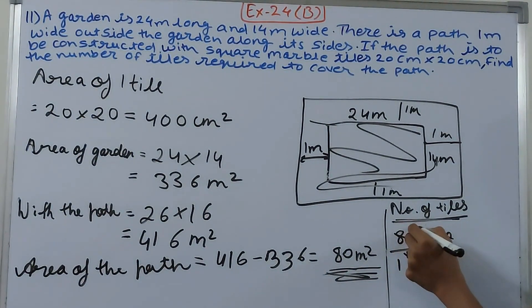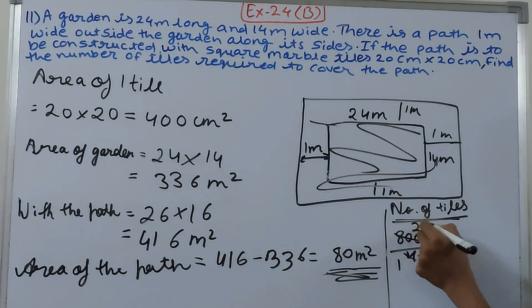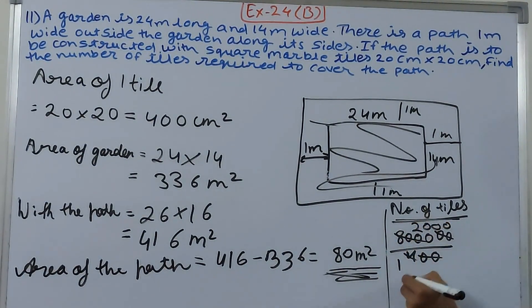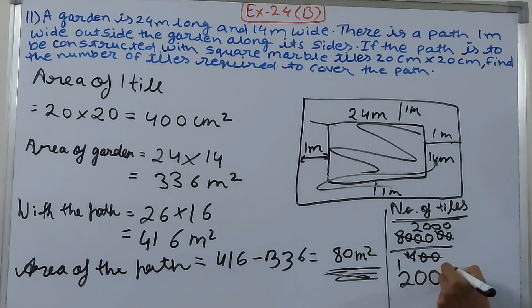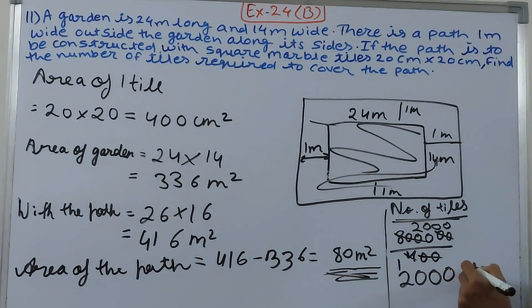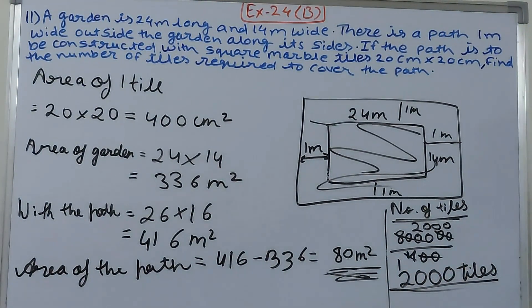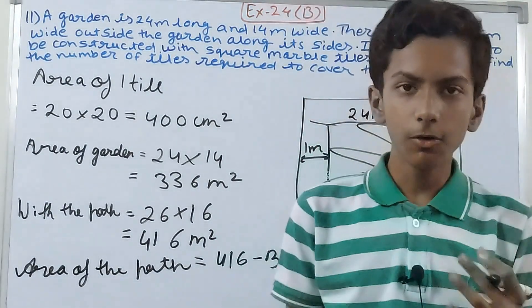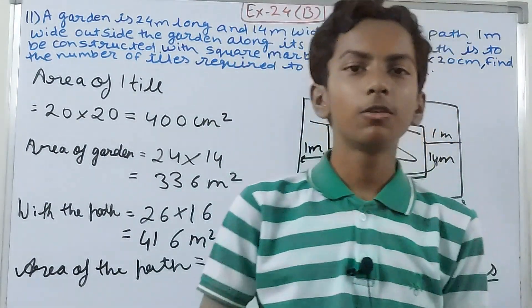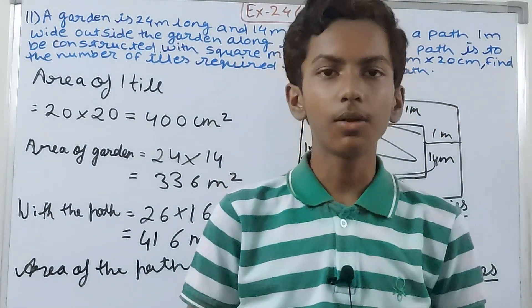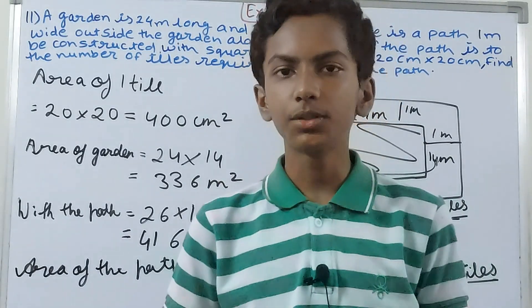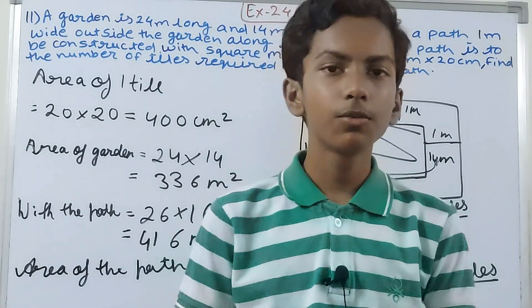So 2000 tiles - this is the total number of tiles that can be put on the floor. Friends, this is all for today. If you are new to my YouTube channel, do not forget to subscribe and leave a like. Till then, take good care of yourselves and bye.